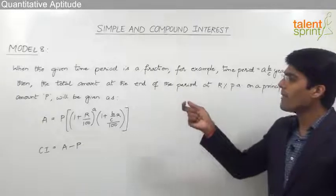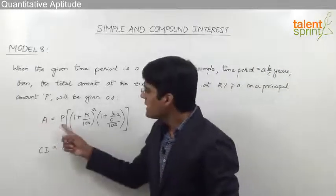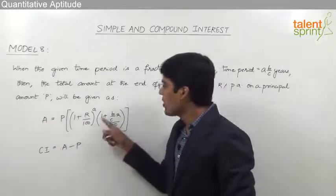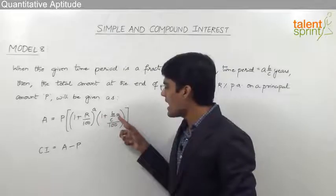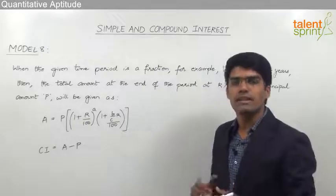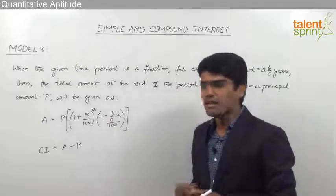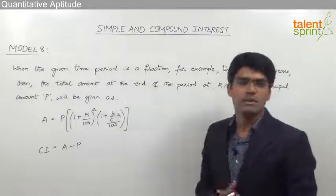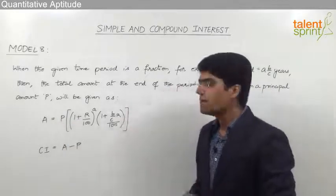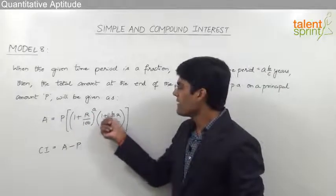The total amount at the end of the period at r percent per annum on a principal amount P will be given as: Amount = P × (1 + r/100)^a × (1 + (b/c) × r/100). Here, a is the integer value in the time period and b/c is the fractional value in the time period. So the total amount = P × (1 + r/100)^(integer value) × (1 + fractional part × rate/100).